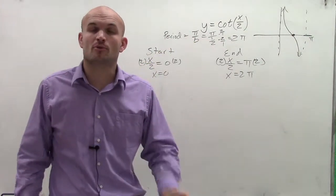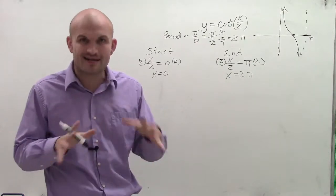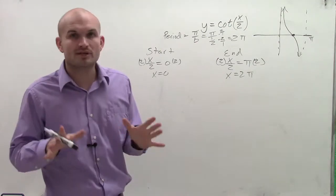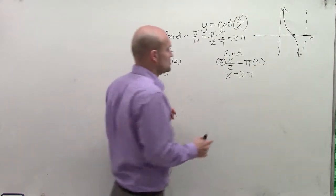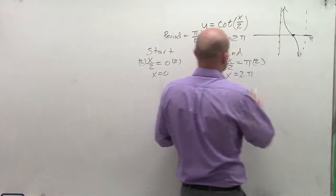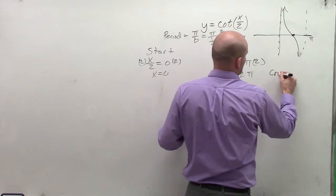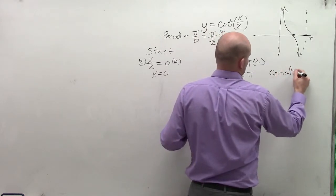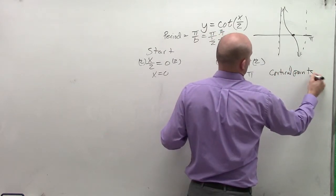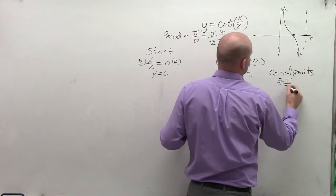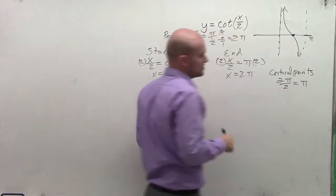Now the next thing is we want to find our critical points. Now when I'm graphing the cotangent graph, I'm only going to deal with two critical points. So to find our critical points, all I'm going to do is I'm going to take our period of our graph and divide it by 2. So I'm going to take 2 pi, divide it by 2, which is just going to yield us with pi.